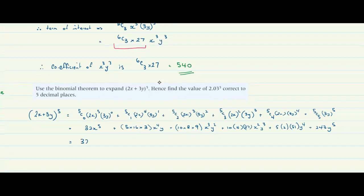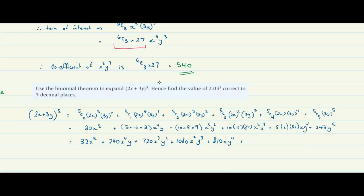Simplifying: 32x⁵ + 240x⁴y + 720x³y² + 1080x²y³ + 810xy⁴ + 243y⁵. I notice there's an x in the xy⁴ term that I nearly missed. So the full simplified expansion is 32x⁵ + 240x⁴y + 720x³y² + 1080x²y³ + 810xy⁴ + 243y⁵.